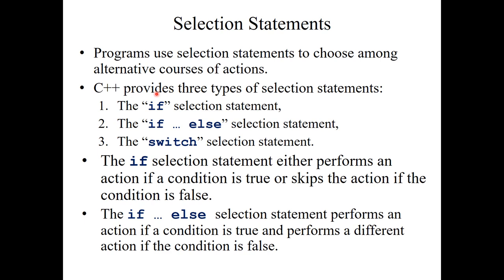C++ provides three types of selection statements. One is called the if selection statement — you can easily guess what it means: if something is satisfied, then do a particular thing. Another is the if-else statement: if something is satisfied, do this; otherwise, do something else. The third one is the switch statement — it's just like an electric switchboard. There are various switches and you press one switch, one electric appliance will work: a bulb shines, a fan runs, a treadmill runs, a table lamp runs, and so on.